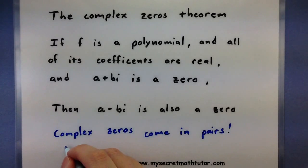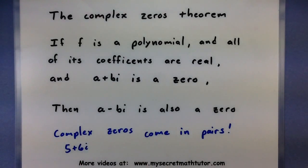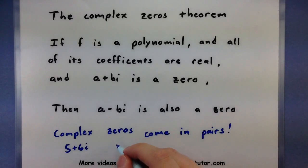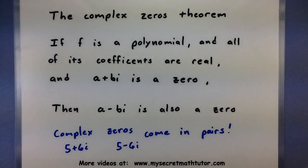So if I know that 5 plus 6i is one of my zeros, according to this theorem, then 5 minus 6i — the complex conjugate of that one — is also a zero.